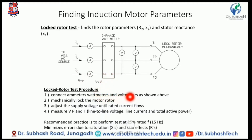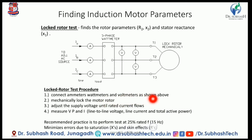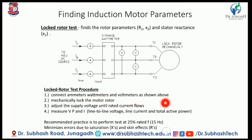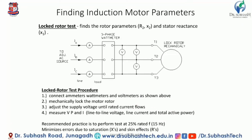Mechanically lock the motor rotor. Adjust the supply voltage until the rated current flows. Measure voltage (line-to-line), current, and total active power. The recommended practice is to measure line-to-line voltage, power, and current at reduced voltage corresponding to rated current.